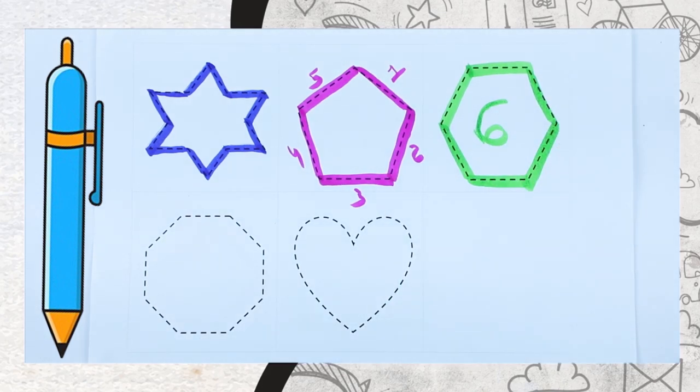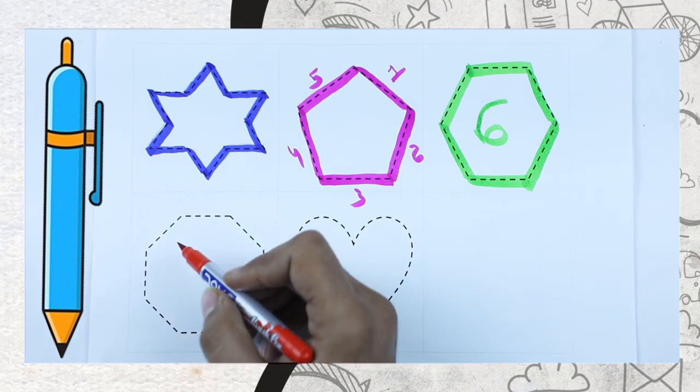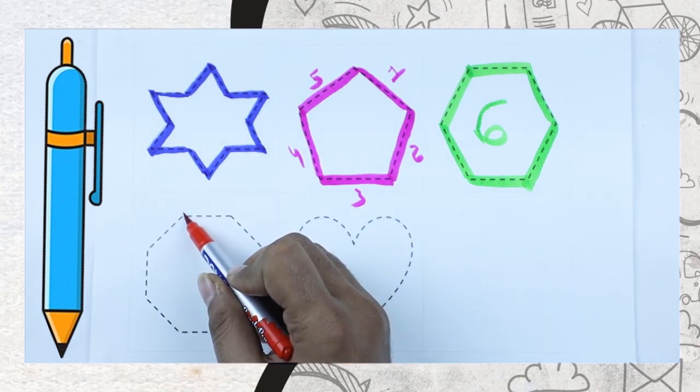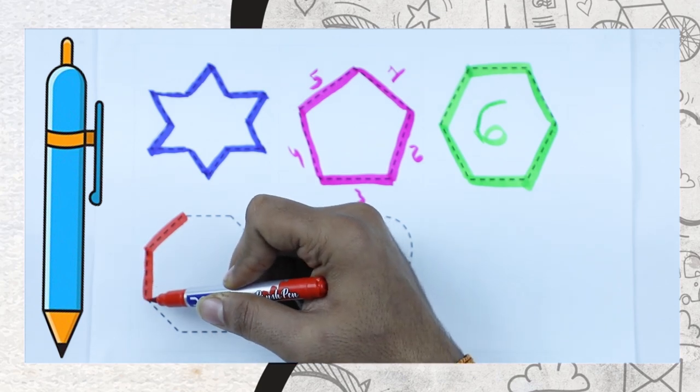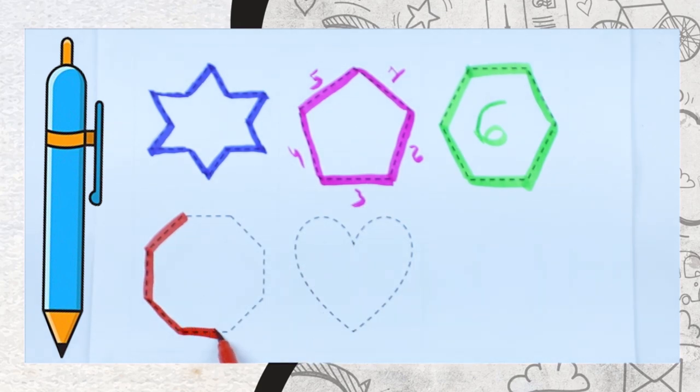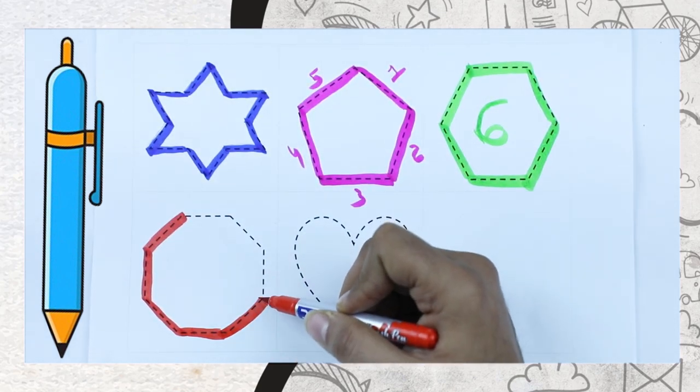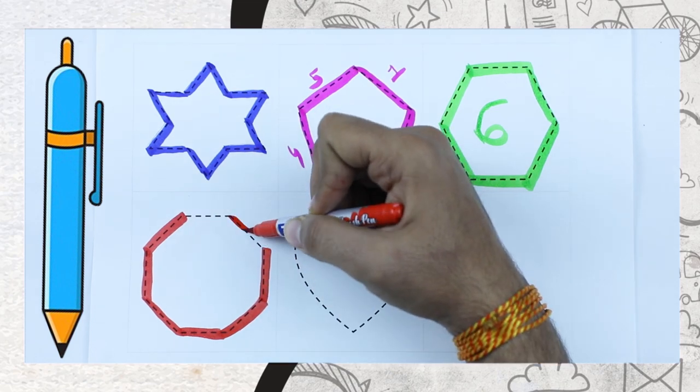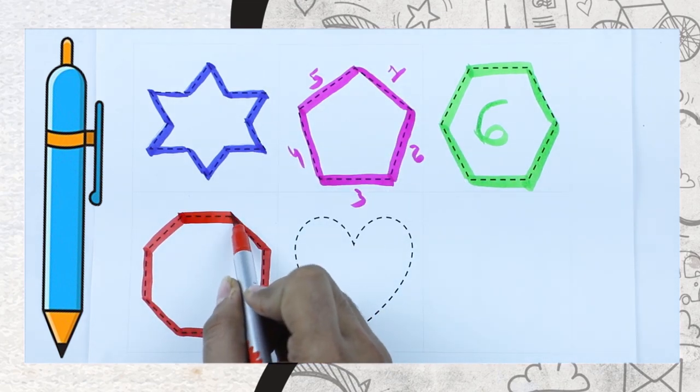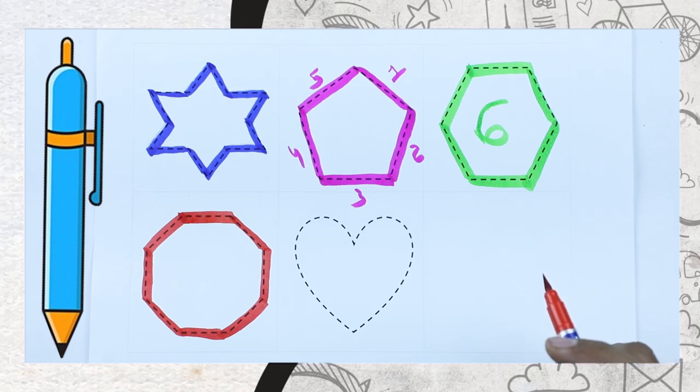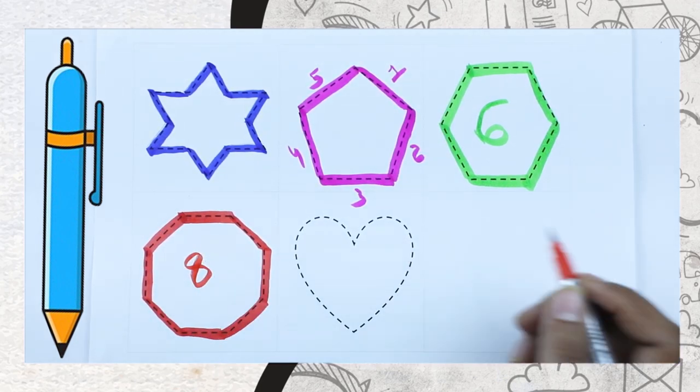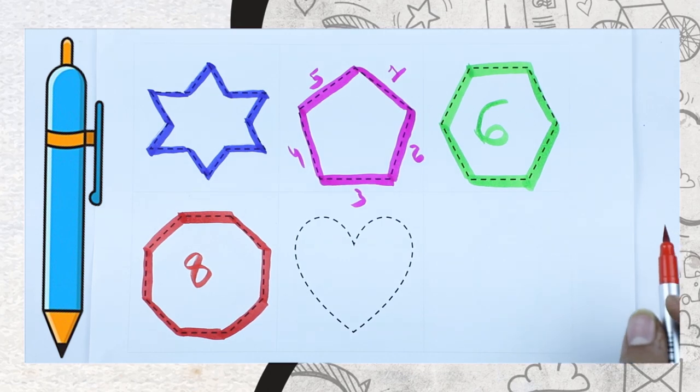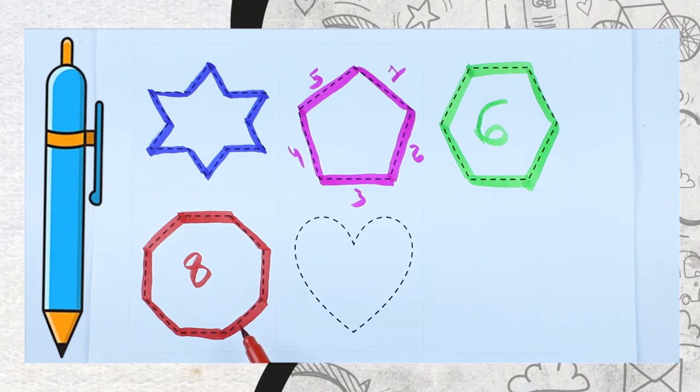Now we make heptagon. One, two, three, four, five, six, seven, eight. It's an octagon. Eight lines have octagon. It's a hexagon. Red color with octagon.